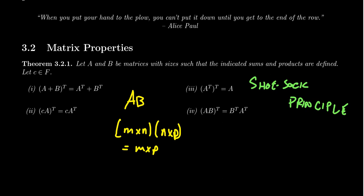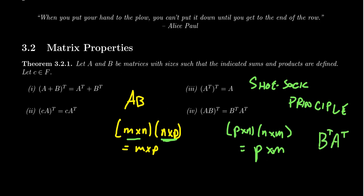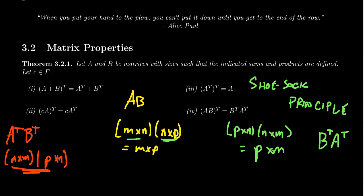Let's see why this has to be. If B is N by P, then B^T is P by N. If A is M by N, then A^T is N by M, giving a P by M product. Since AB is M by P, its transpose should be P by M — which matches B^T A^T. If you tried A^T B^T instead, you'd have N by M times P by N, and the product might not even be defined.